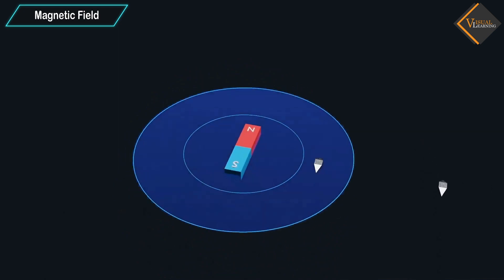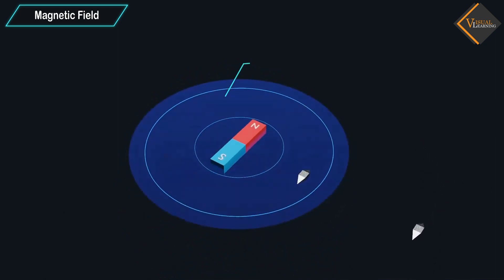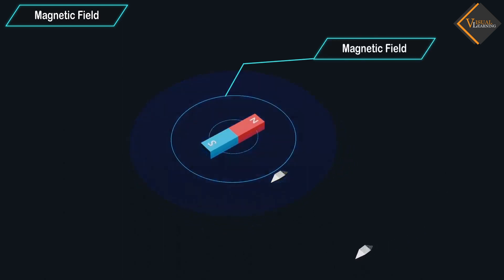This area around the bar magnet in which magnetic force can be exerted is known as magnetic field.